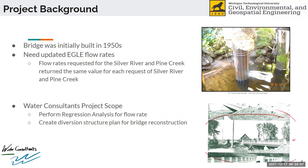The bridge is pretty old — it was built in the 1950s. Part of our project was finding the design flow rates for this area. We received flow rates that were equal for two separate watersheds, one within the other, and we returned the same flow rate for each watershed, which is very unlikely. So we conducted a regression analysis and an HMS analysis to find the more accurate design flow rates for the bridge. The full scope of our project is finding the design flow rates for the bridge and working on the design of the diversion structure.